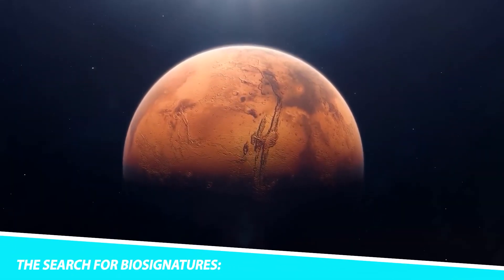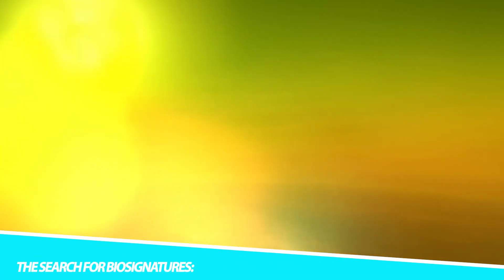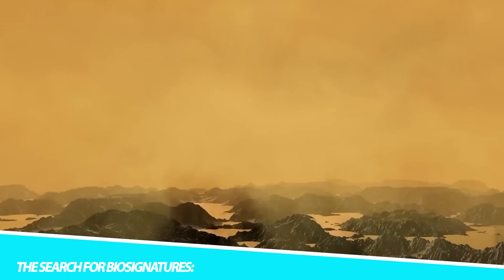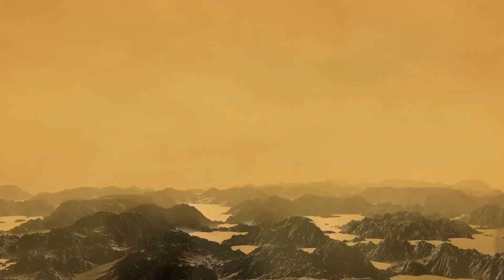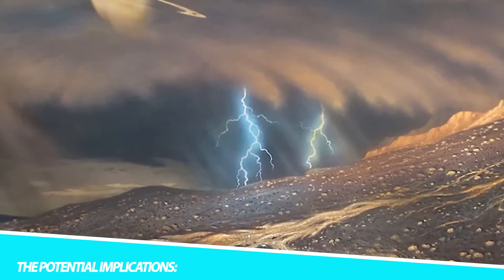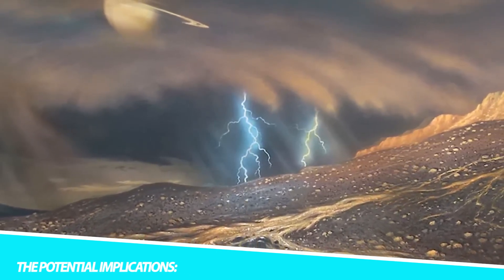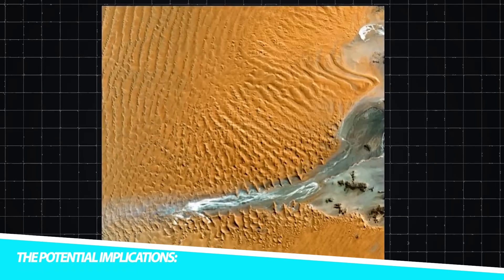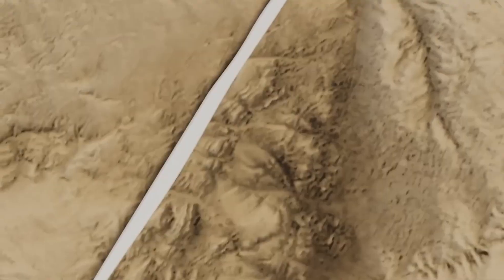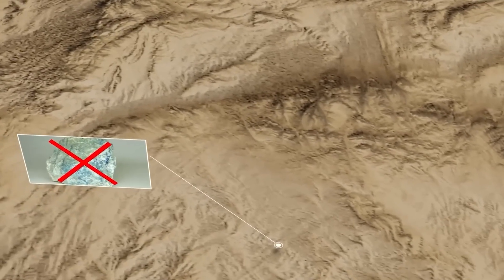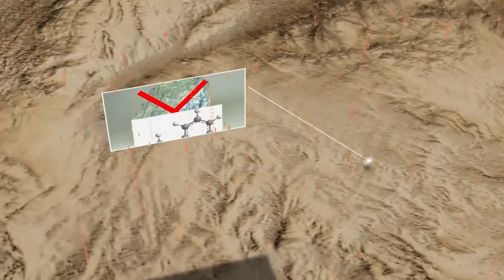In the quest to detect and understand potential life on Titan, scientists are exploring the concept of biosignatures, indicators that can provide evidence of biological activity. These biosignatures might include complex organic molecules or distinctive chemical imbalances in the moon's environment. Discovering life on Titan would not only rewrite the textbooks on astrobiology, but also have profound implications for our search for extraterrestrial life throughout the universe. If life can thrive in such an extreme and alien environment, it opens up the possibility that life may exist in other seemingly inhospitable places, expanding the range of habitable zones beyond what we currently comprehend.